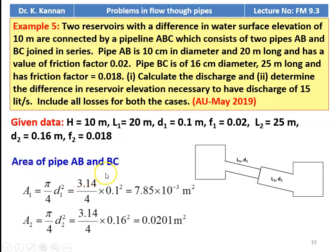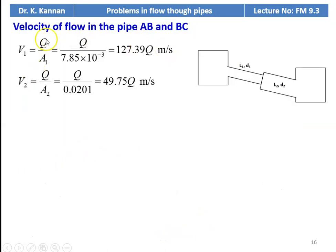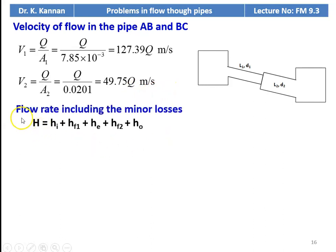Area of pipe AB: A1 = π/4 × 0.1² = 7.85 × 10⁻³ m². Area of pipe BC: A2 = π/4 × 0.16² = 0.0201 m². Velocity V1 = Q/A1 = 127.39Q m/s; V2 = Q/A2 = 49.75Q m/s. The head loss equation including minor losses: H = Hi + Hf1 + He + Hf2 + Ho.